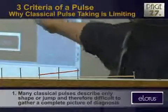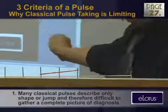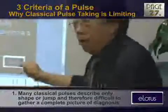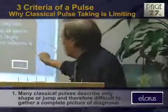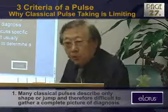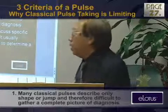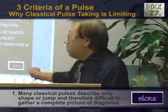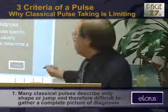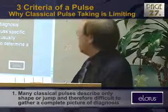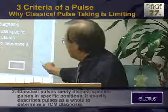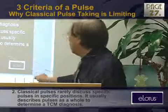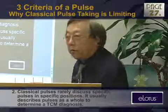Many classical professors describe only shape and jump, therefore difficult to gather completely. That's exactly what's happening for 5,000 years. Classical professors describe in the books in ways so brief and so incomplete - I don't know how you can make a diagnosis or treatment plan out of such simple words for pulse science. Pulse science can be very complicated. Classical professors rarely discuss specific pulse inspections - it's usually just a square pulse as a whole. But there's no such thing as a whole - the pulse can be complicated.